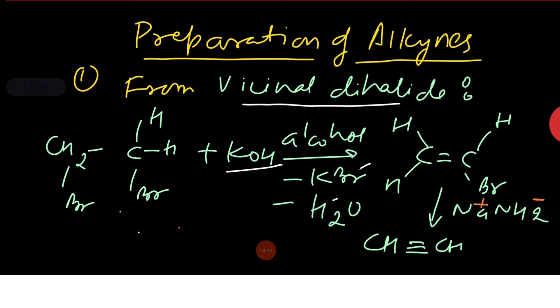then potassium hydroxide undergoes dehydrohalogenation reaction - means hydrogen and halogens are removed. One molecule of hydrogen halide is eliminated to form alkynyl halide, which on treatment with sodamide gives rise to alkyne. Here NaBr is released and NH3 is released resulting into formation of alkyne.